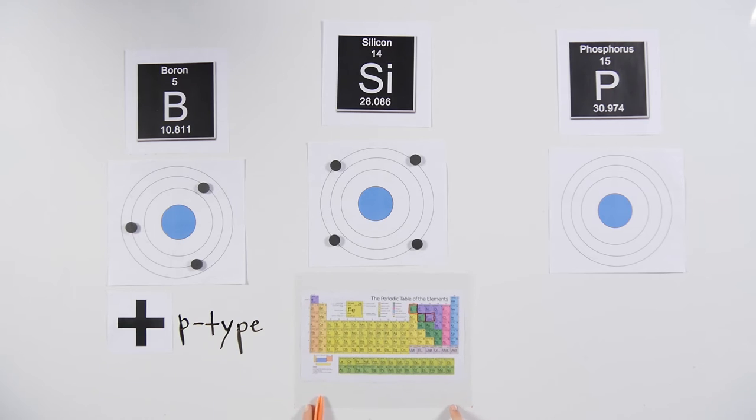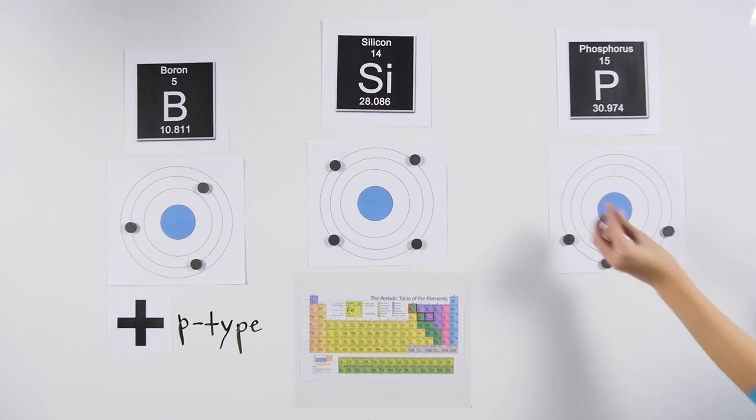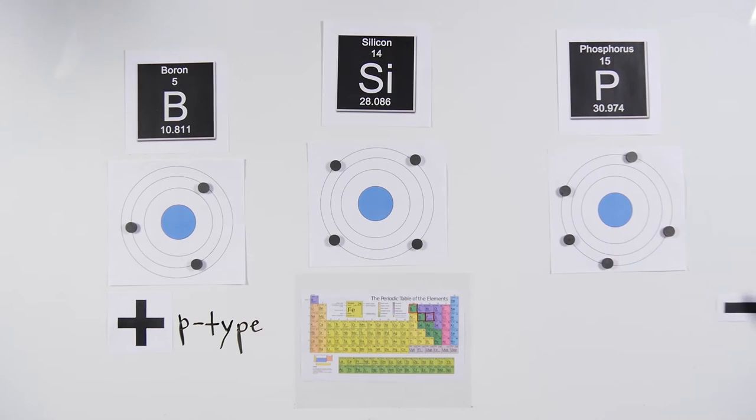The outer electron shell of phosphorus has five electrons, which is one more than silicone. This leaves the top layer with a slight negative charge and needing to give away an extra electron. This is called n-type silicone because of the negative charge.